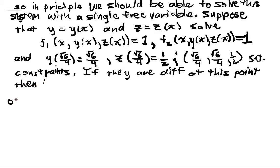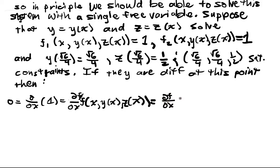We've got 0 = ∂/∂x of 1 = ∂/∂x of f at (x, y(x), z(x)). And if we use the chain rule, this is just going to be df/dx dx/dx + df/dy dy/dx + df/dz dz/dx.